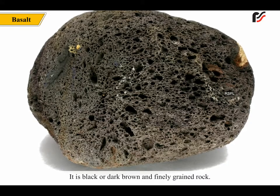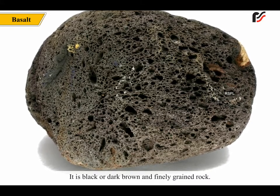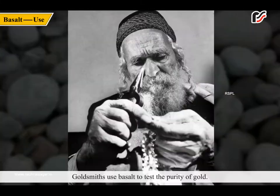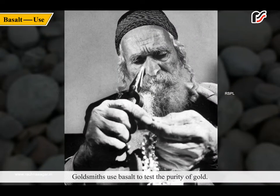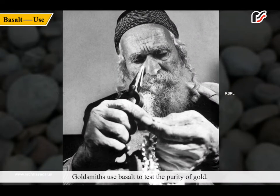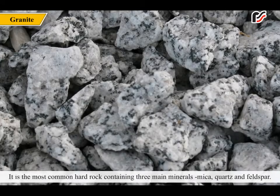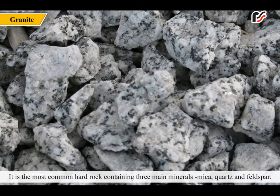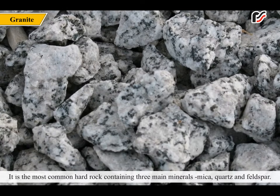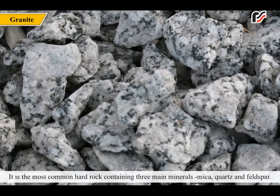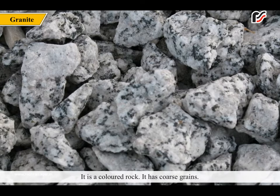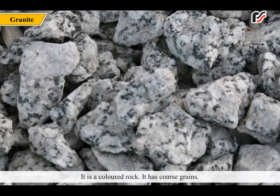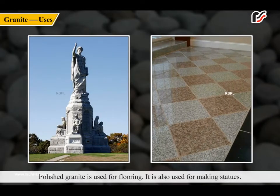Basalt is black or dark brown and finely grained rock. Goldsmiths use basalt to test the purity of gold. Granite is the most common hard rock containing three main minerals: mica, quartz and feldspar. It is a colored rock with coarse grains. Polished granite is used for flooring. It is also used for making statues.